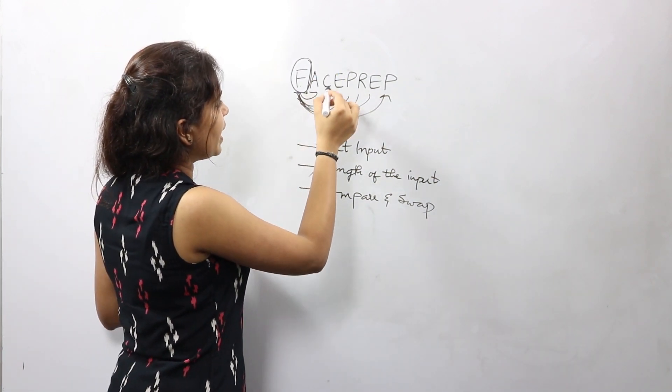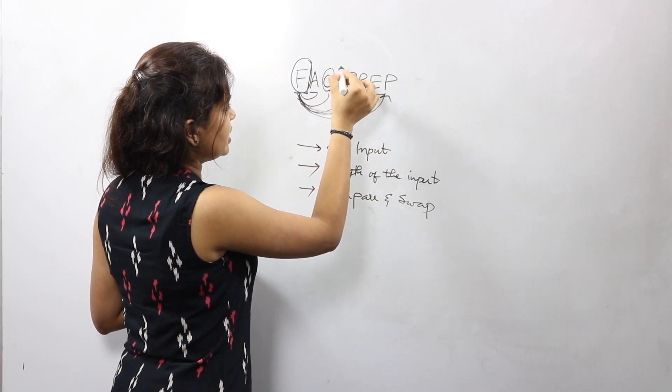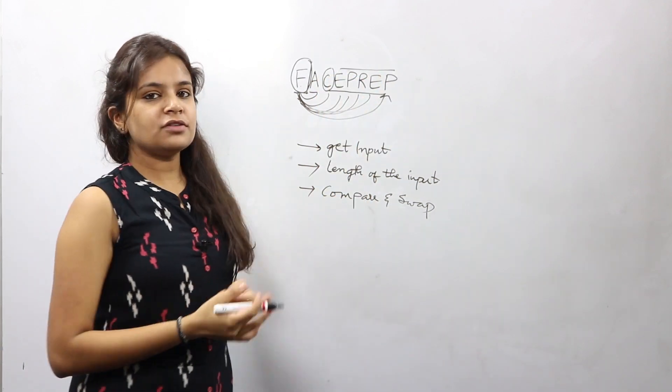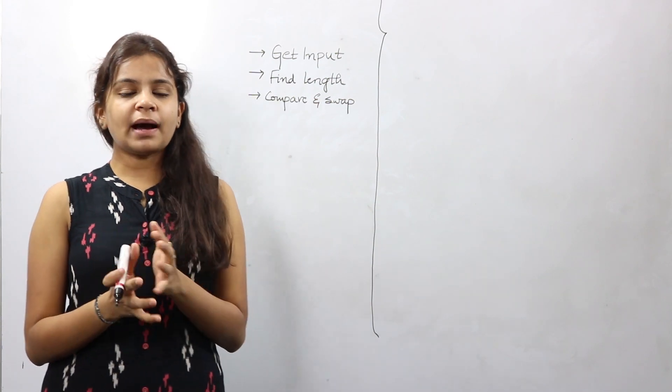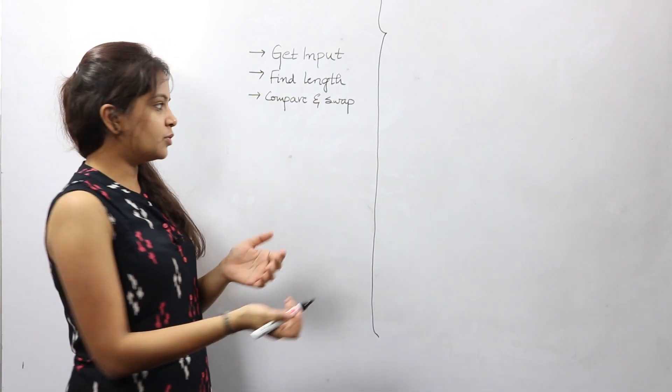Then you go for A, compare it with all the remaining characters, then you go for C, compare it with all of them and so on. The first part of our algorithm was to get an input from the user.